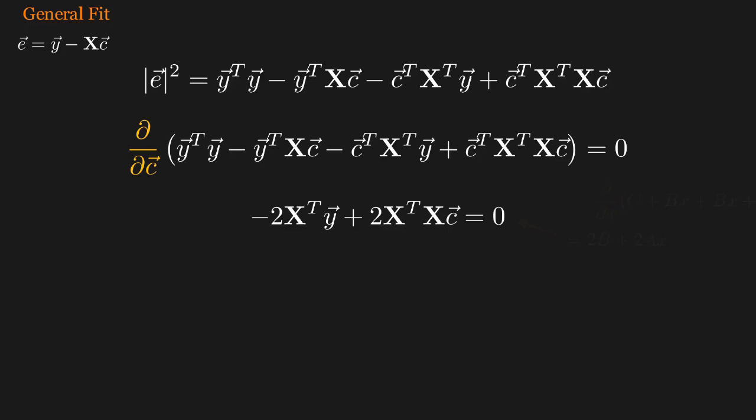Now as it turns out, the two linear terms are actually equal. So they add and give a 2, which conveniently cancels with the 2 from the derivative of the quadratic term.